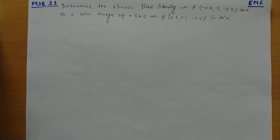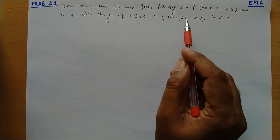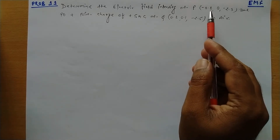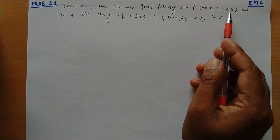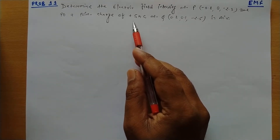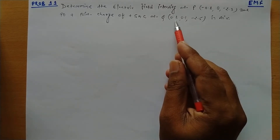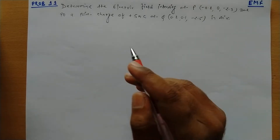Hello everyone. Now we look at problem number 11 in EMF. Determine the electric field intensity at point P, whose coordinates are (-0.2, 0, -2.3), due to a point charge of plus 5 nano coulomb at point Q, whose coordinates are (0.2, 0.1, -2.5) in the air.